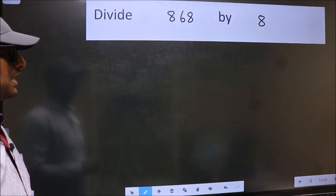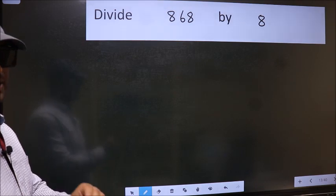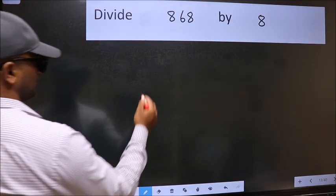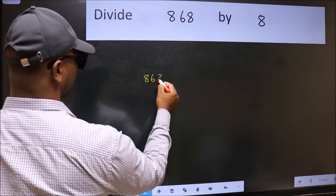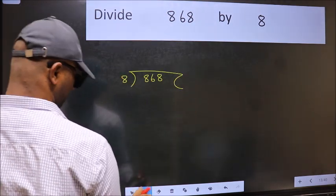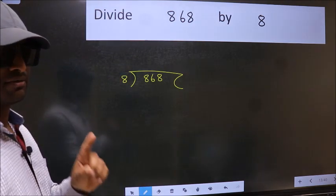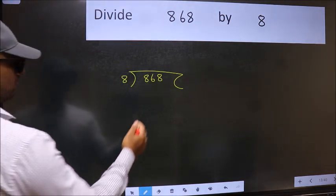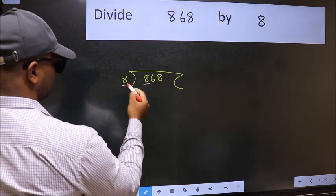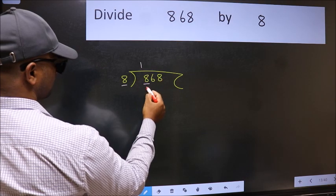Divide 868 by 8. To do this division, we should frame it in this way: 868 here and 8 here. This is your step 1. Next, here we have 8 and here 8. When do we get 8 in the 8 table? 8 times 1 is 8.